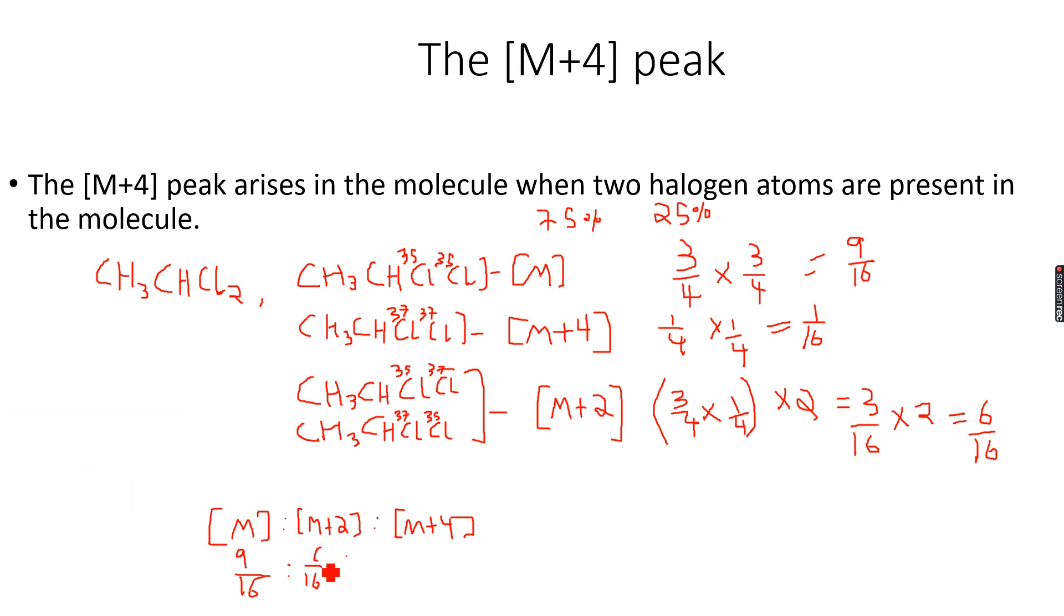So these are the ratios. I have a denominator of 16 in each case, so I can simply say this is 9:6:1. These are the relative abundances, the ratio of the relative abundances of the M:M+2:M+4 peaks. And this calculation does come in the papers, so you must know the method of how to do this by using probabilities.